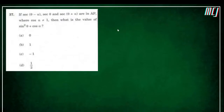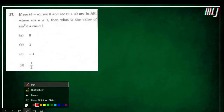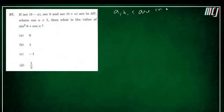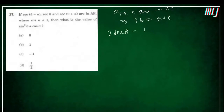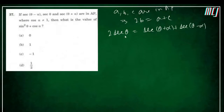If A, B, C are in AP then 2B = A + C. So here: 2·secθ = sec(θ + α) + sec(θ − α).